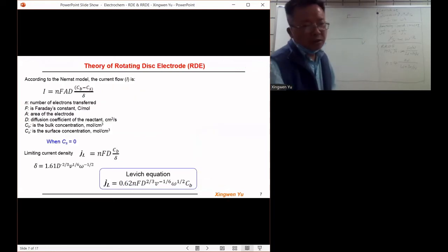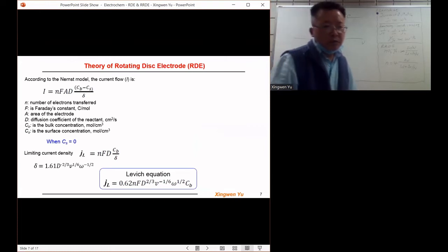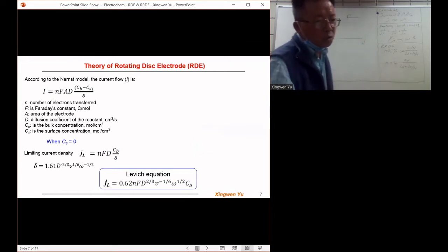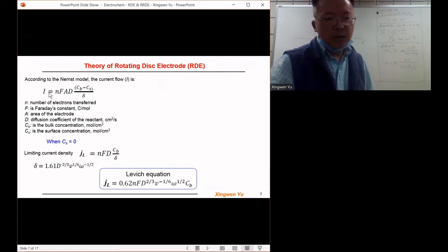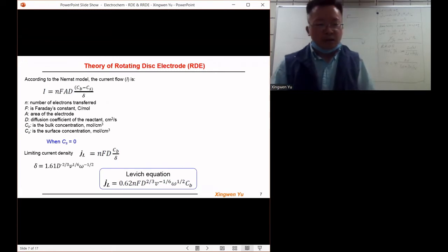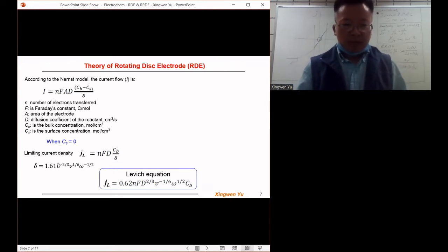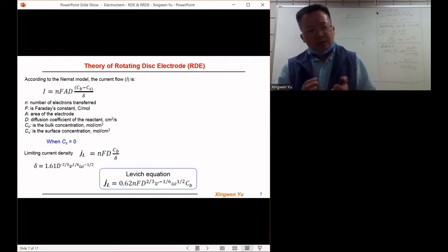Let's continue the theory of the RDE. For a specific electrochemical reaction under the Nernst model, the current flow to the electrode can be expressed with this equation: I = nFAD(C_B - C_S)/δ. N is the charge transfer number, the number of electrons transferred. F is the Faraday constant. A is the area of the electrode. D is the diffusion coefficient of the reactant. C_B is the bulk concentration of the reactant. C_S is the surface concentration.